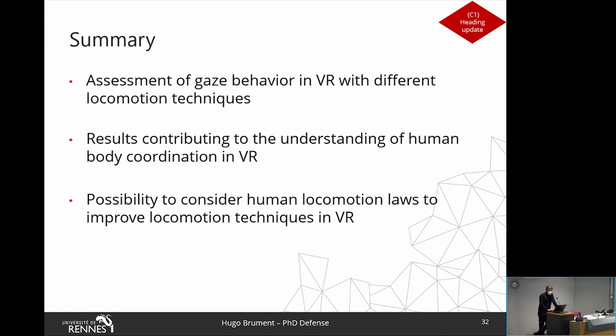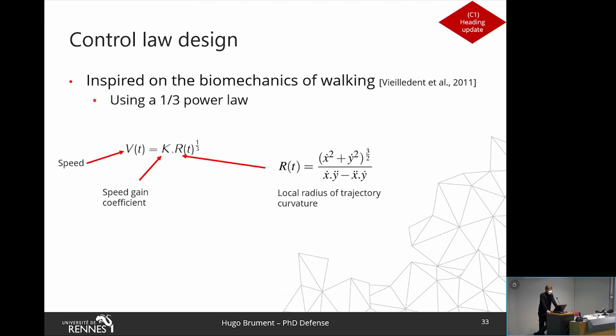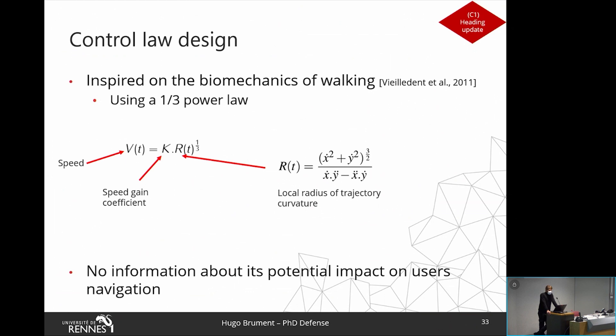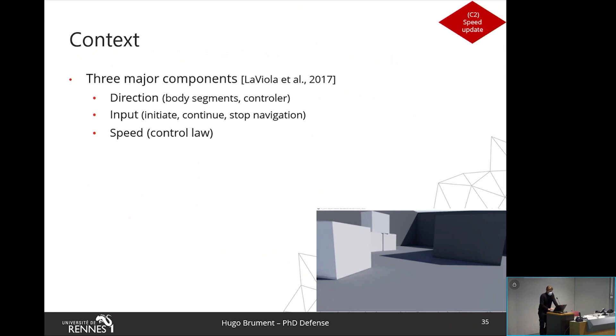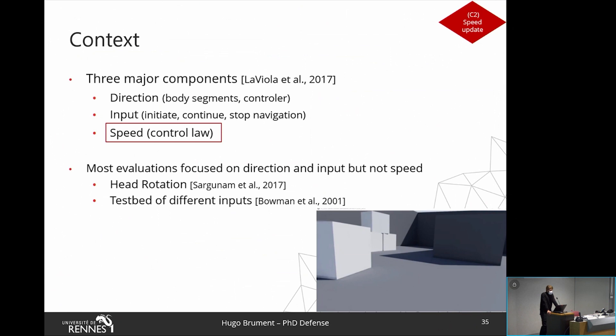However, we had no information about the potential impact of the control law on users' navigation, which motivated a second contribution: investigating the impact of the control law — the speed update — on users' body coordination. As noted in related work, steering techniques have three major components: direction, input, and speed. Most research focused on varying direction or input components, but little is known about how speed could alter users' navigation. Our research question was: what is the influence of the control law on trajectories and users' preferences?